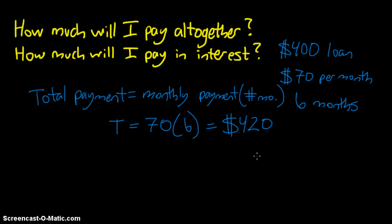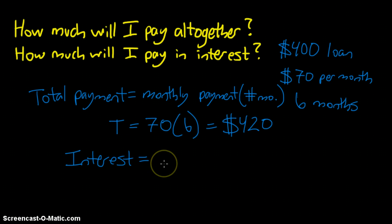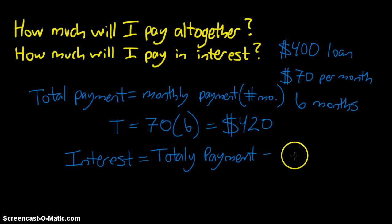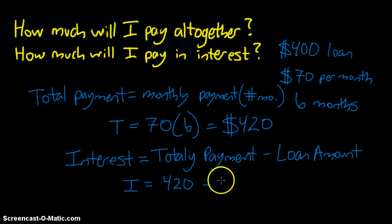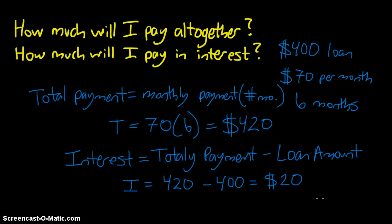Now for the second part — how much of this will you just pay in interest? There's a formula for it, but it's not very complicated. You take your total payment — that $420 we just found — and subtract the loan amount, the actual amount you started with at the beginning of this loan. So our interest would be: we're actually paying $420, but we're only getting $400 out of this loan. So we can easily see that our interest amount is just $20. That's the extra amount on top of what you're getting that you will actually end up paying back to the bank.